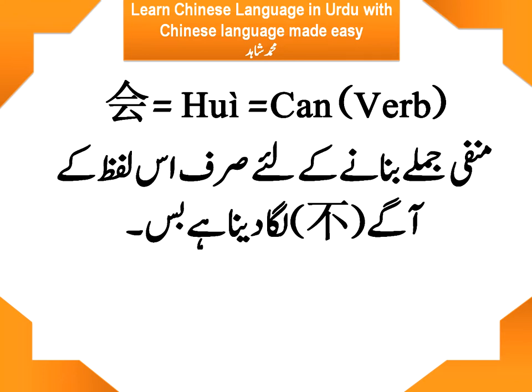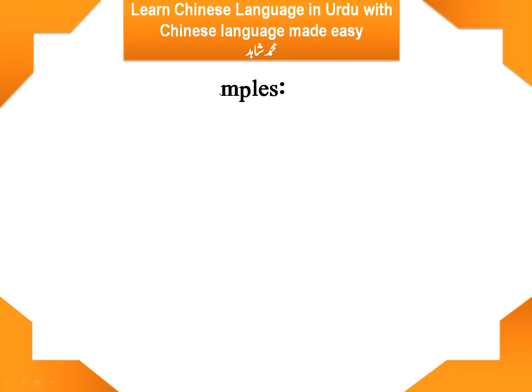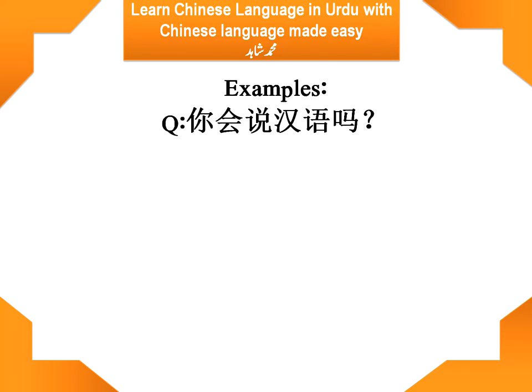So let's get to know about some sentences by using 会. The first sentence is: 你会说汉语吗? 你 means 'you,' 会 means 'can,' 说 means 'to speak,' 汉语 means 'Chinese language,' and 吗 is a question-asking particle used in Chinese sentences to make the whole sentence interrogative.